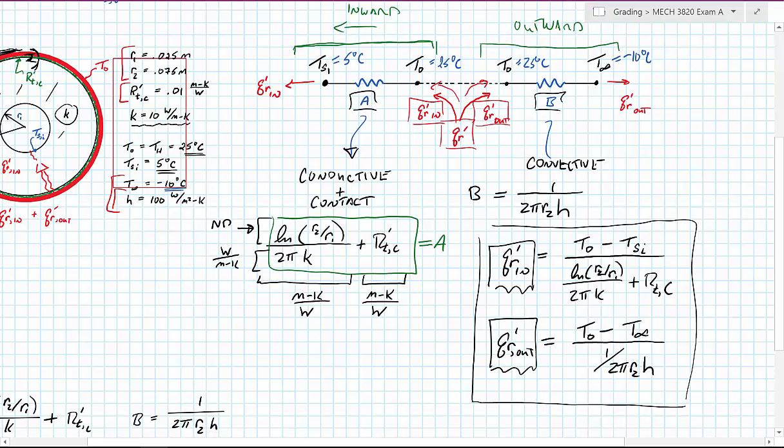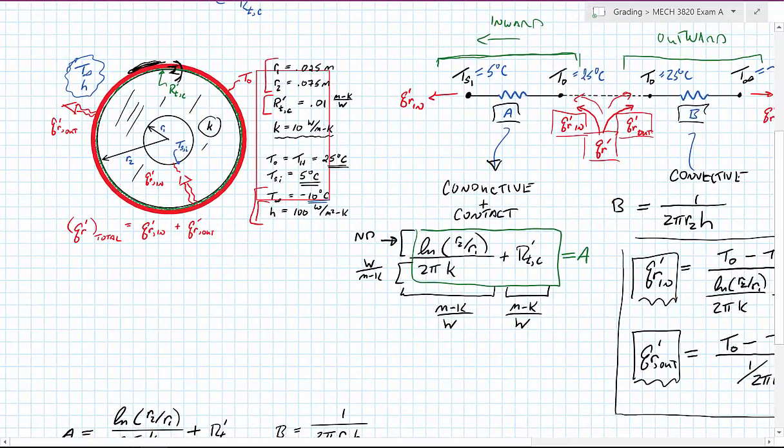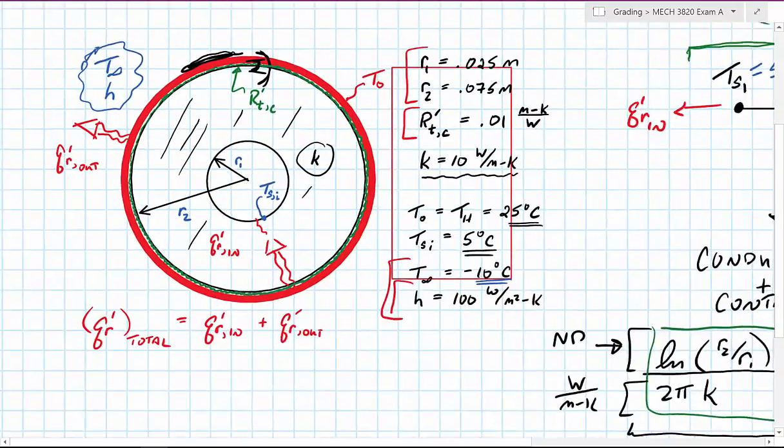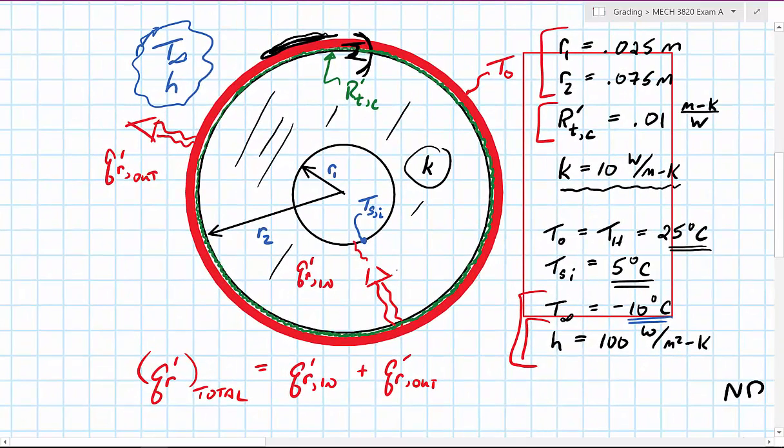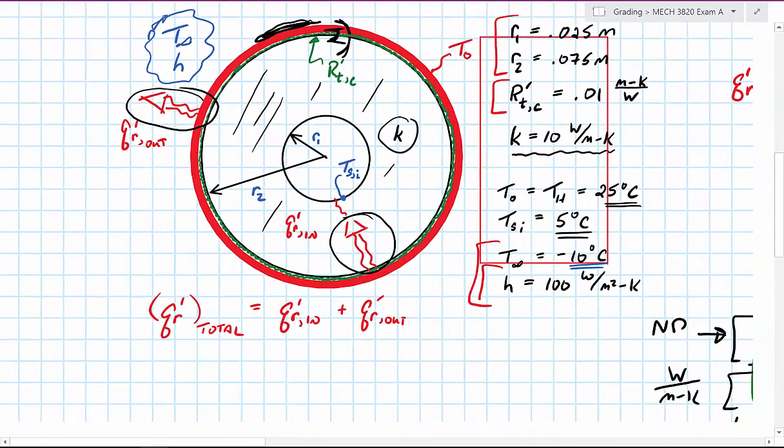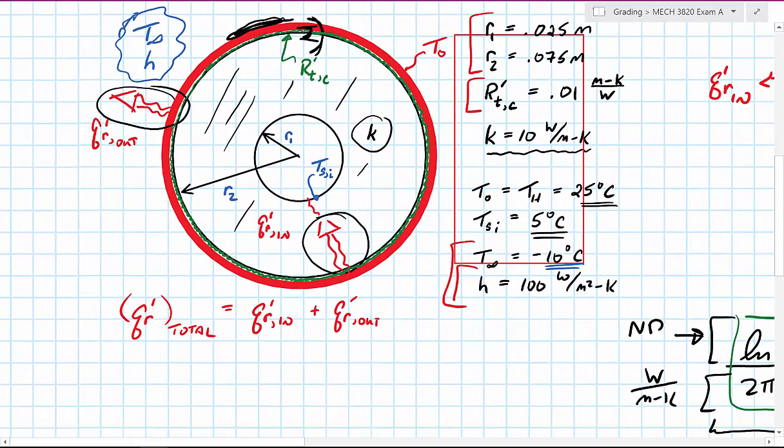And even though one of these terms, Q in is going to go inward towards the negative R direction and one is going to go out towards the positive R direction, we're not going to assign any vector signs to them because we're just looking at how much energy or what's the heat rate that's required to satisfy these terms.